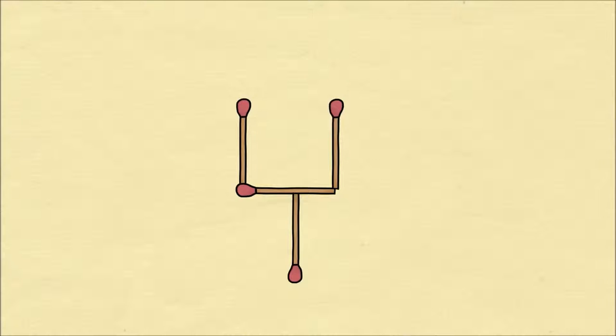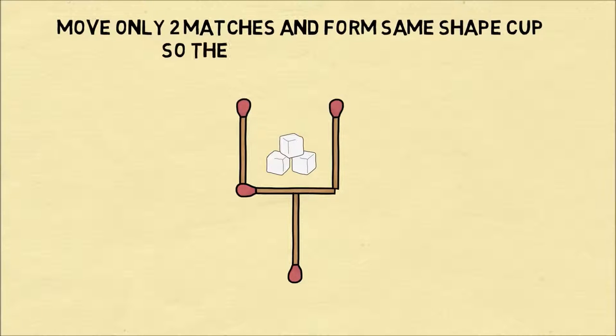The second puzzle, we'll use four matches to create a cup, and inside of the cup, we have ice cubes. The puzzle is, you have to move only two of the matches, and you still end up with the same shape of the cup, but once you have the solution, the ice will be on the outside of the cup.